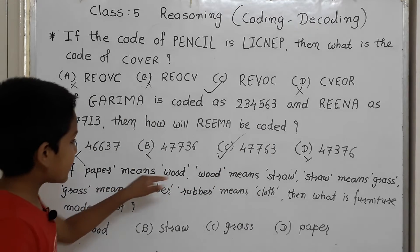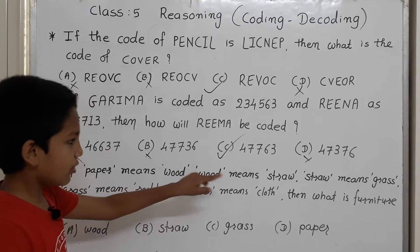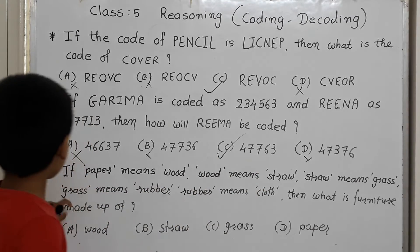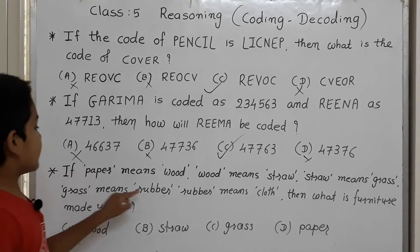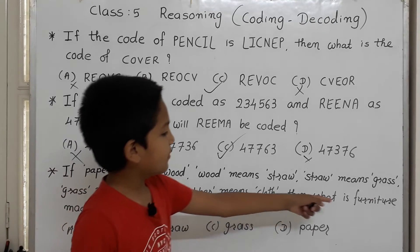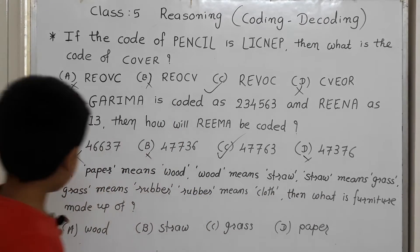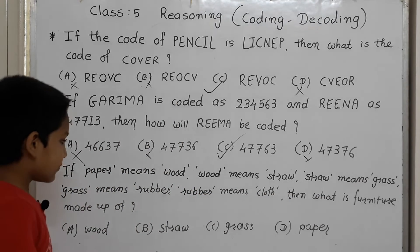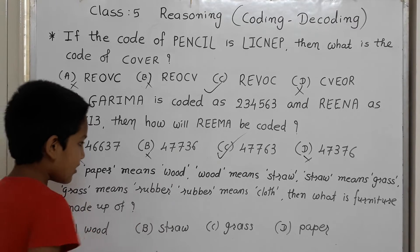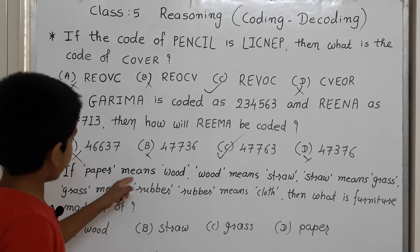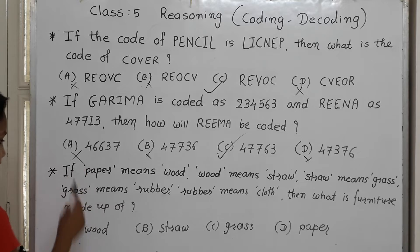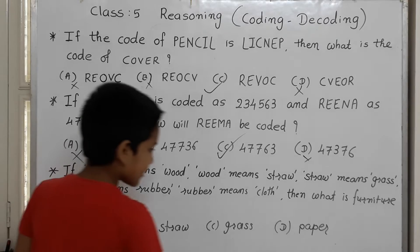Next question: If paper means wood, wood means straw, straw means grass, grass means rubber, and rubber means cloth — then what is furniture made up of? Furniture is made up of wood. But wood means paper. So our answer is paper.